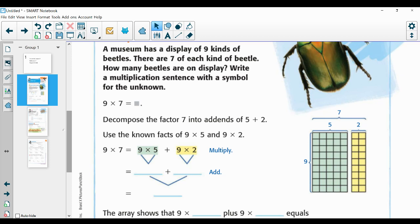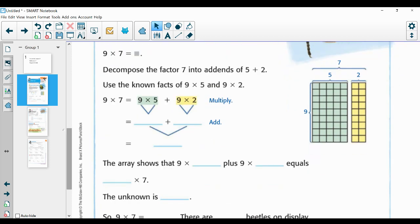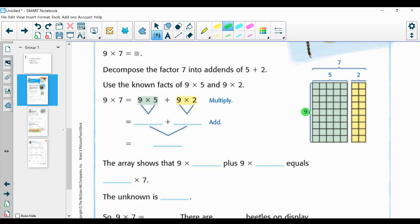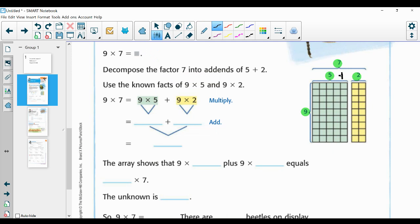Okay, so we're going to use the known facts of nine times five and nine times two. So if you look over here at the array, you'll see you've got nine rows. Hold on. Okay, you've got nine rows of seven, which is the same as five and two. Put the plus sign in there and see it. Five plus two is seven. So you have five in each row on the first array. You have two in each row on the second array. So this is the same as nine times five. And this is the same as nine times two. And all together, it's nine times seven.